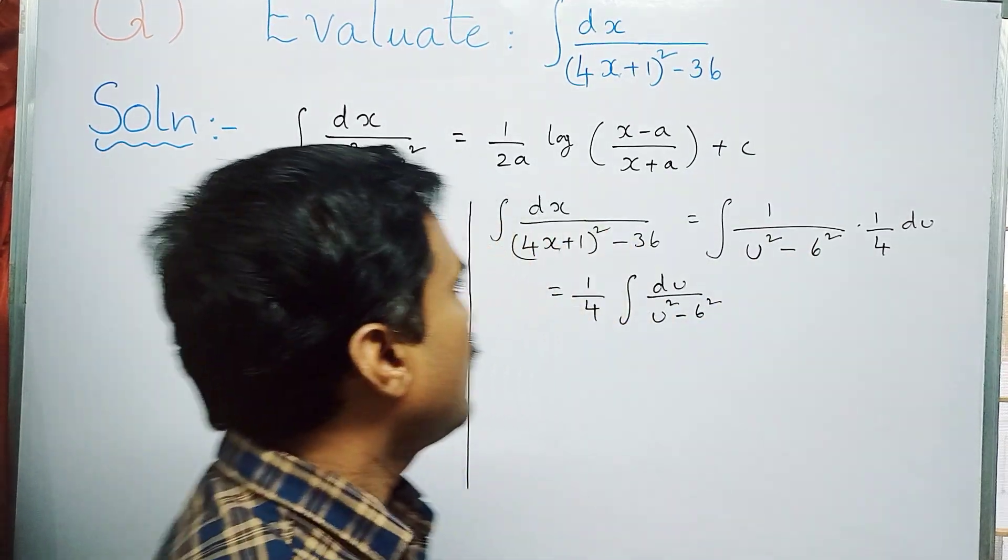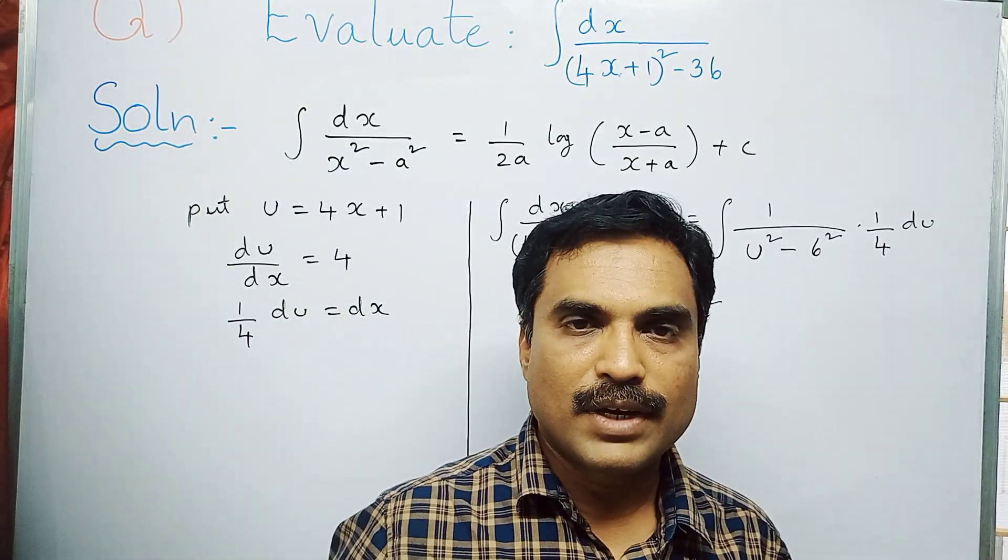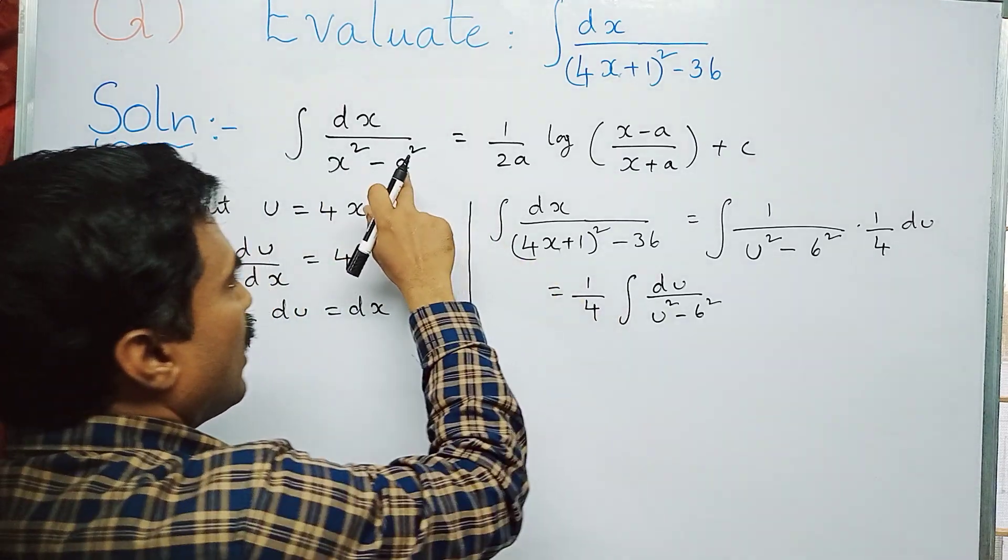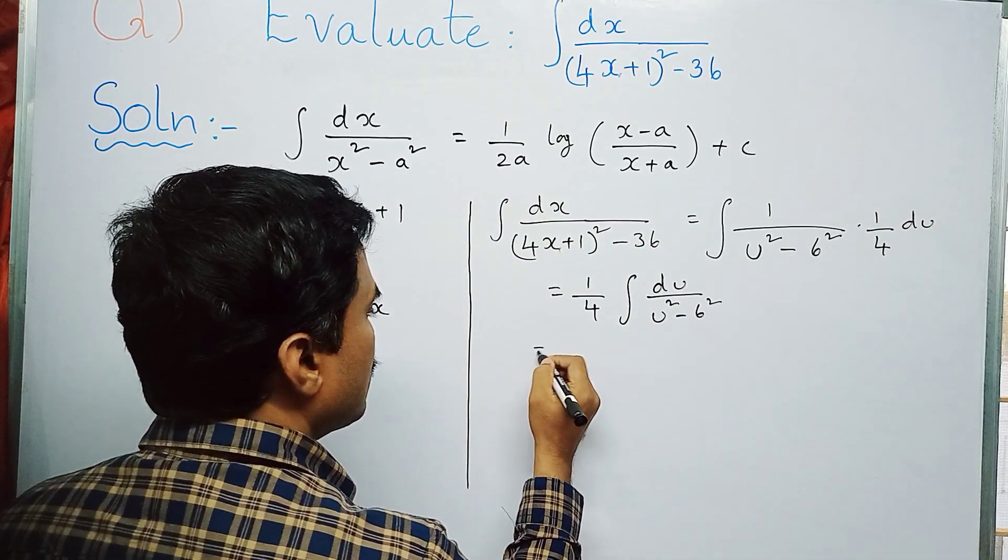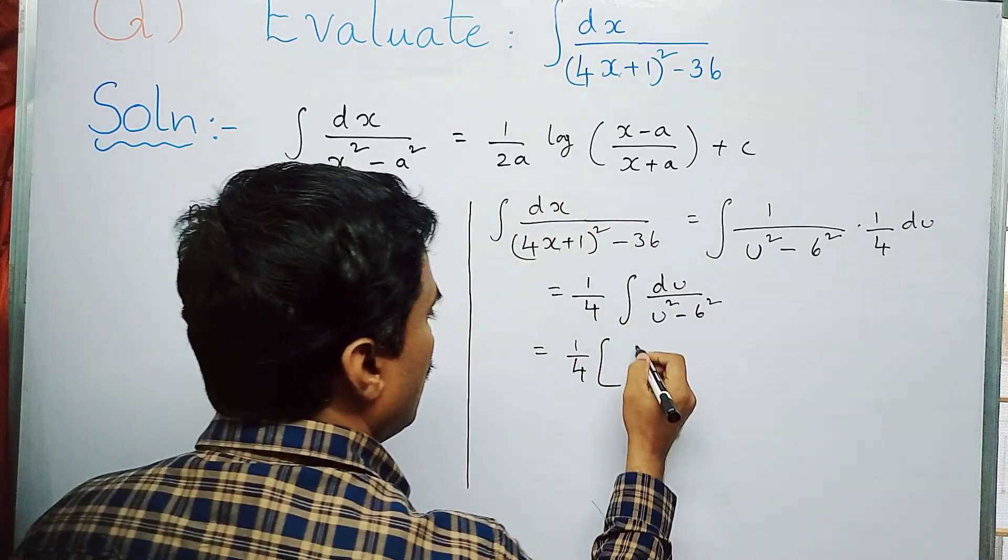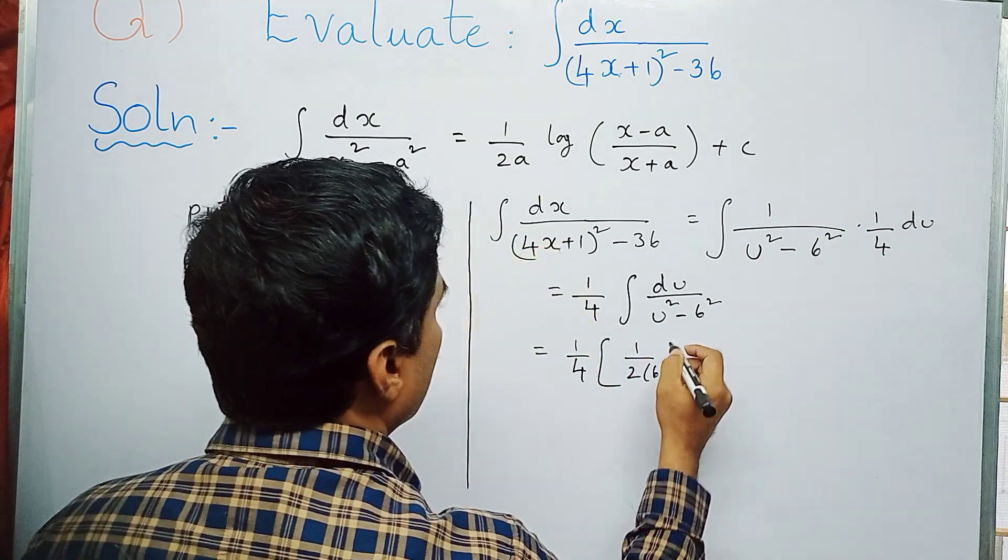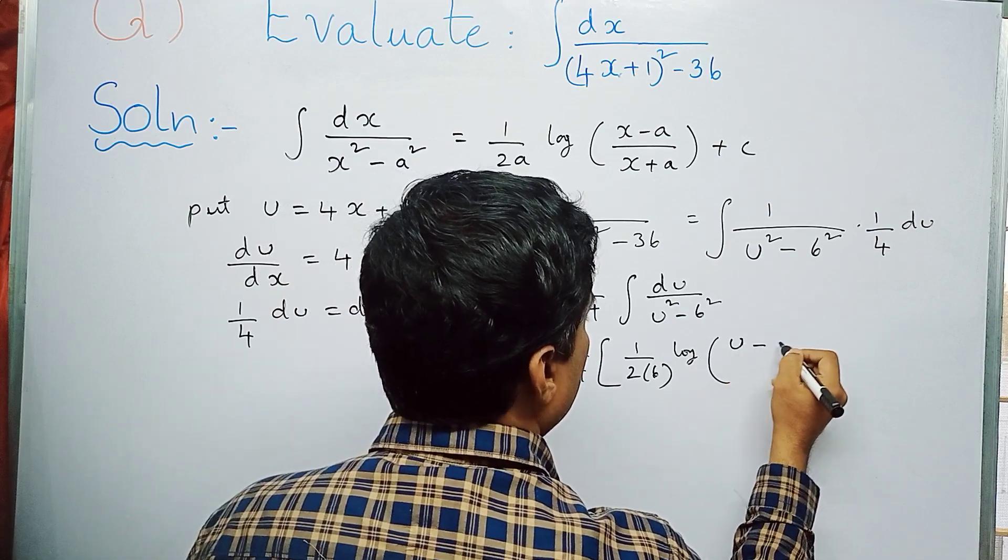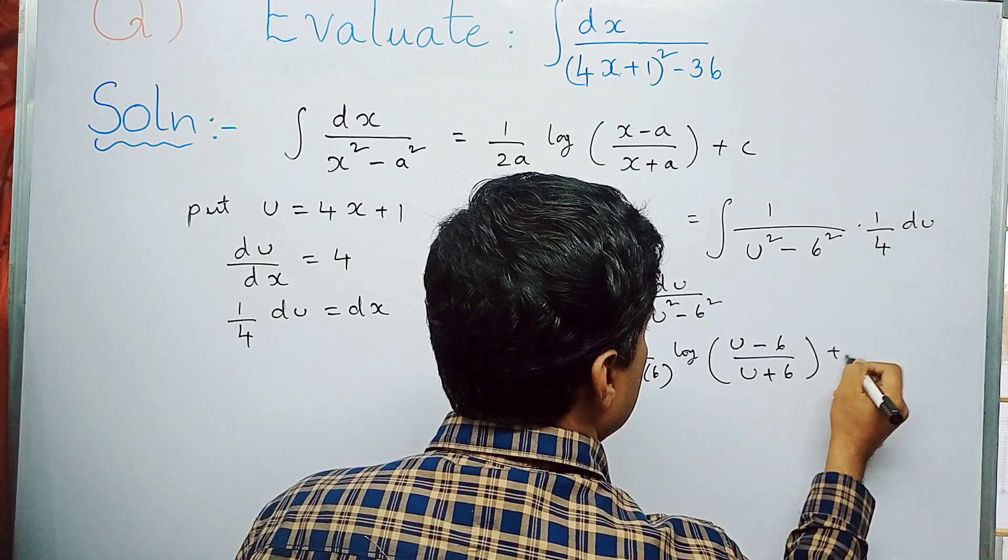Now you can apply the above formula. Integral du by u² - 6² is 1 by 2a log of (u - a) by (u + a) plus c. In place of x put u here, and in place of a that is 6. So you get 1 by 4 times 1 by 2 times 6, log (u - 6) by (u + 6) plus c.